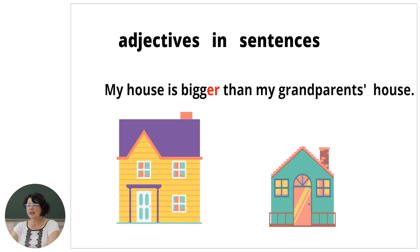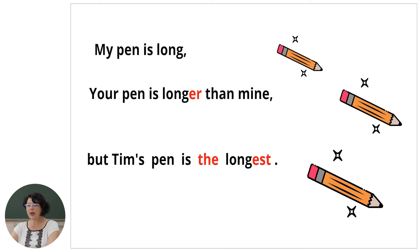Let's see some sentences with these adjectives. My house is bigger than my grandparents' house. My pen is long. Your pen is longer than mine. But Tim's pen is the longest.